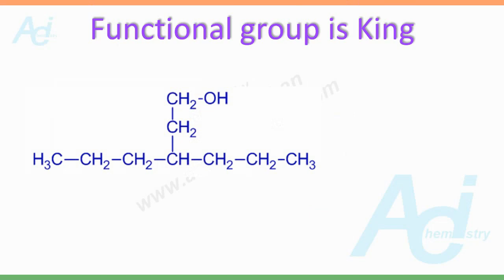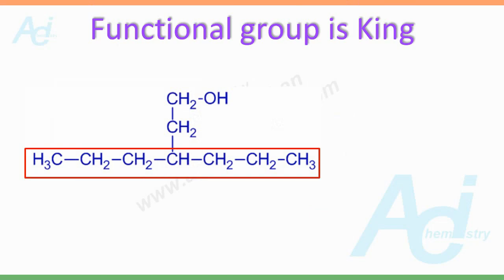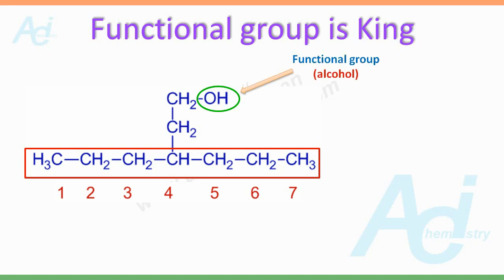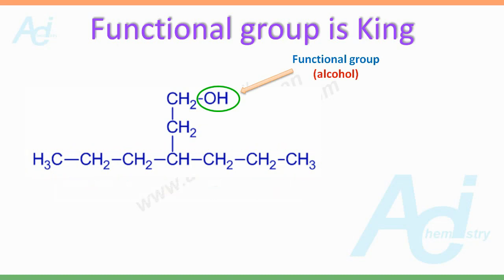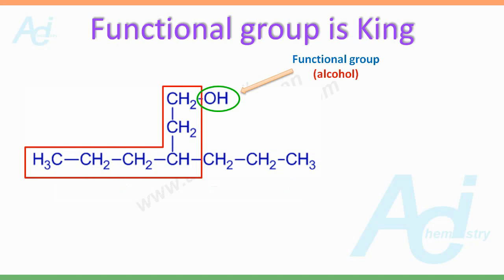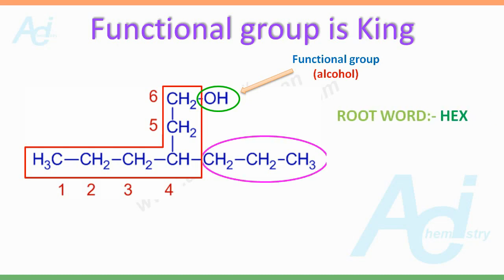Look at this molecule which substantiates the importance of the functional group while deciding the parent chain. You can clearly see there is a carbon chain with 7 carbon atoms. We may be tempted to select this as the parent chain since it contains more carbon atoms. However, one must not forget about the functional group. There is an alcoholic functional group which is not directly connected to the chain with 7 carbon atoms. Hence the parent chain must be chosen so that it contains the OH group. Since this chain with the functional group contains only 6 carbon atoms, the root word is hex. The CH2CH2CH2CH3 group is now considered as a substituent, referred to as a propyl group.